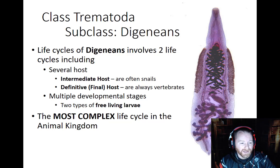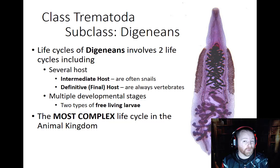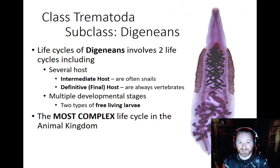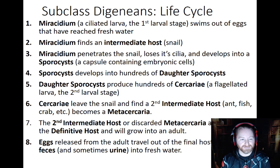I'm going to start by talking about trematodes — specifically the subclass digeneans. Digeneans actually have a very, very complicated reproductive cycle. It includes multiple hosts and usually starts with an intermediary host and ends up with a definitive host, which is the final host. During that time, there are usually multiple different free-living larval stages that occur in between some of the different hosts. It's really the most complicated life cycle in the animal kingdom that we know of.